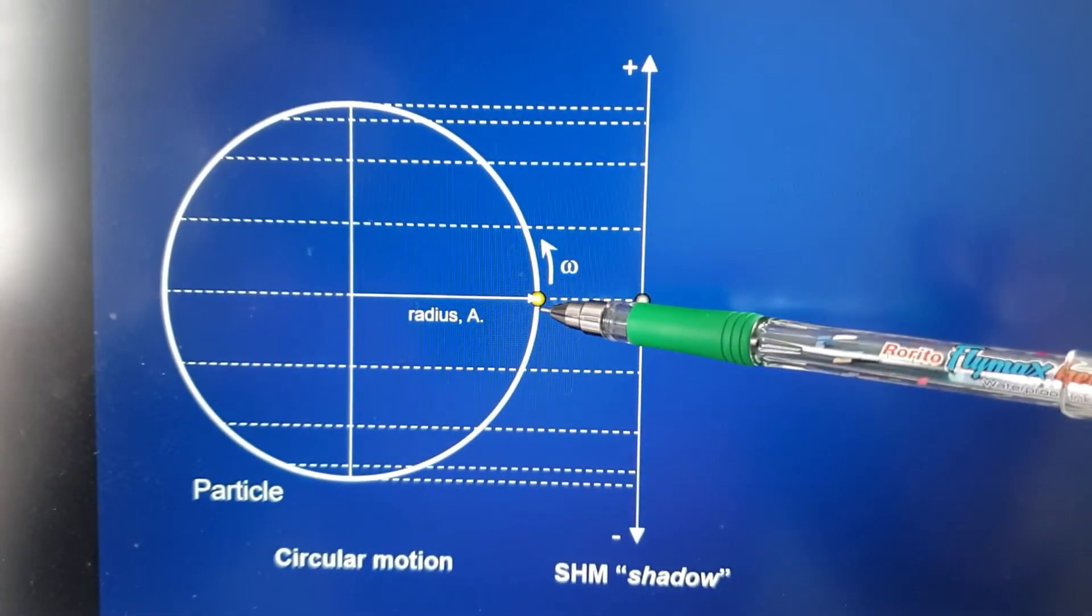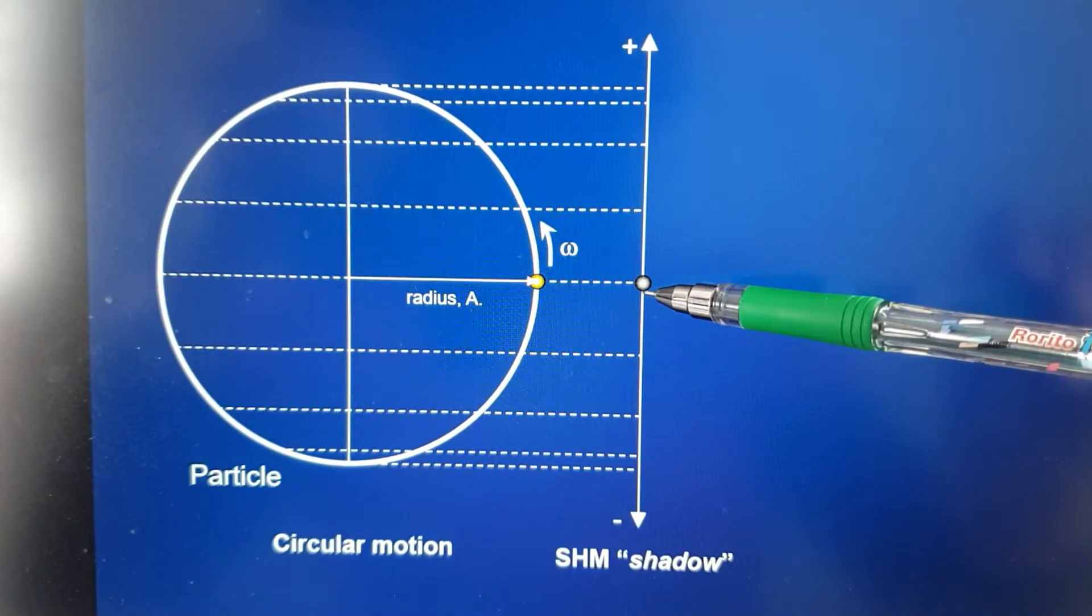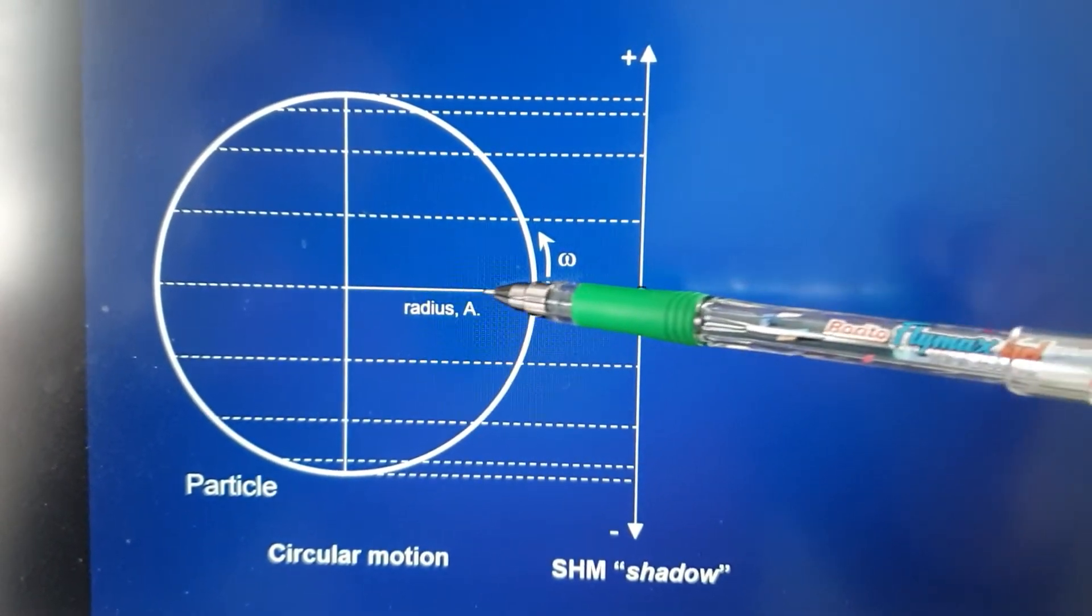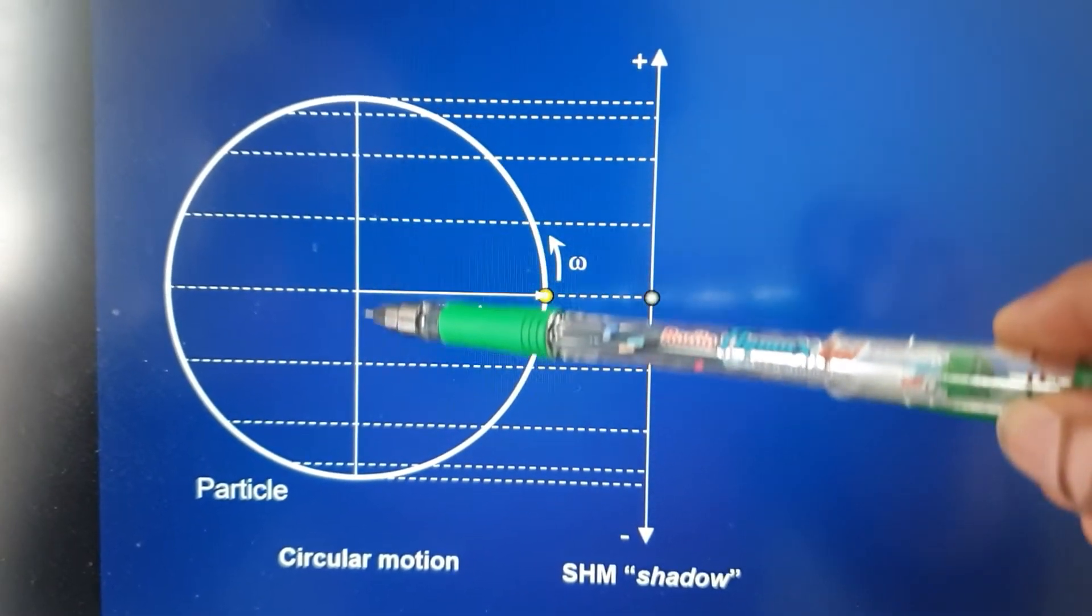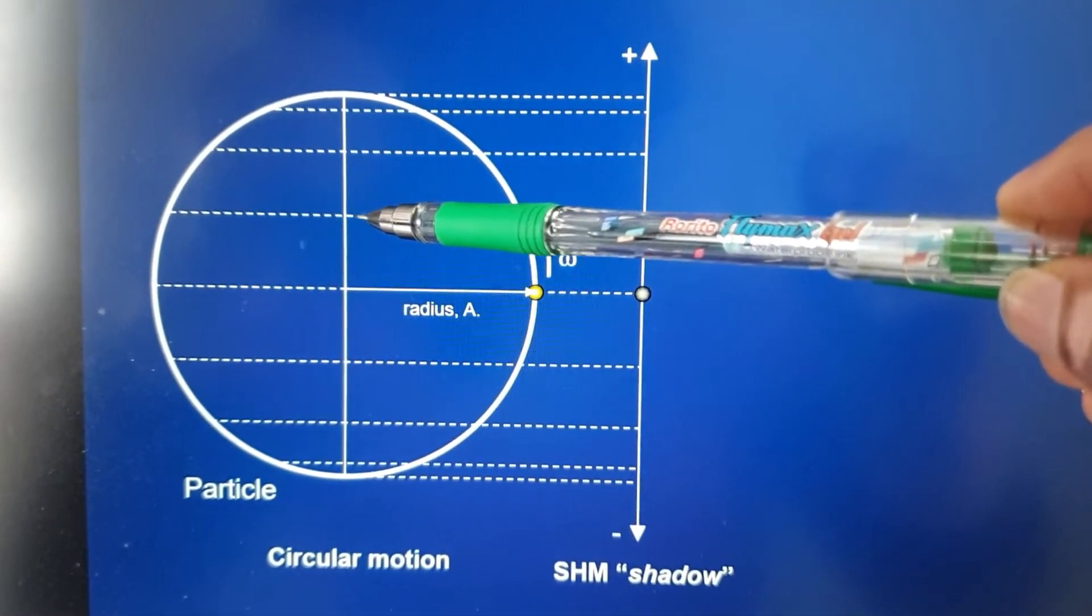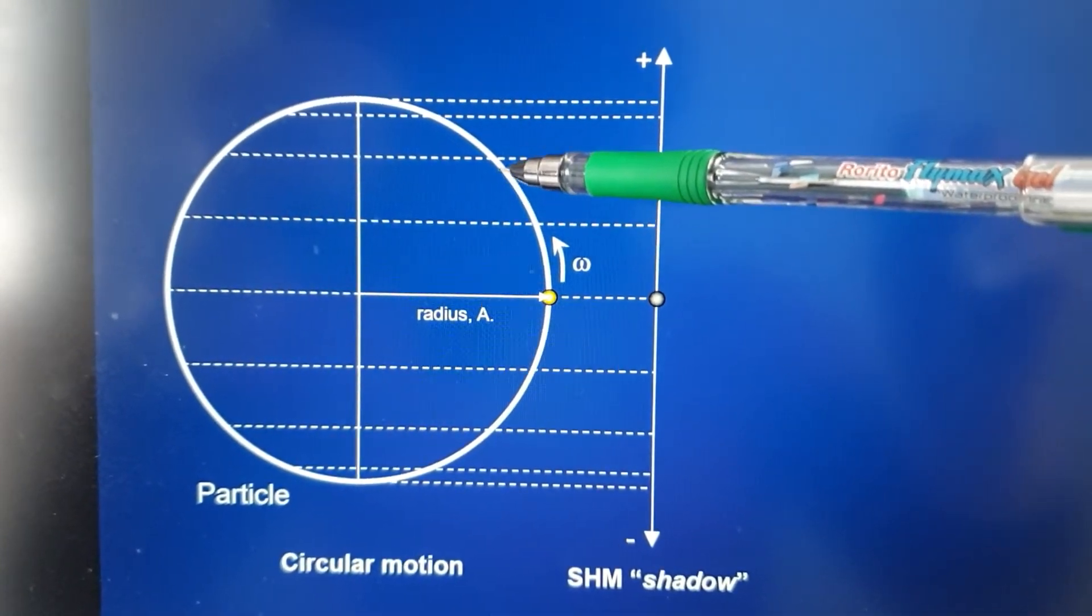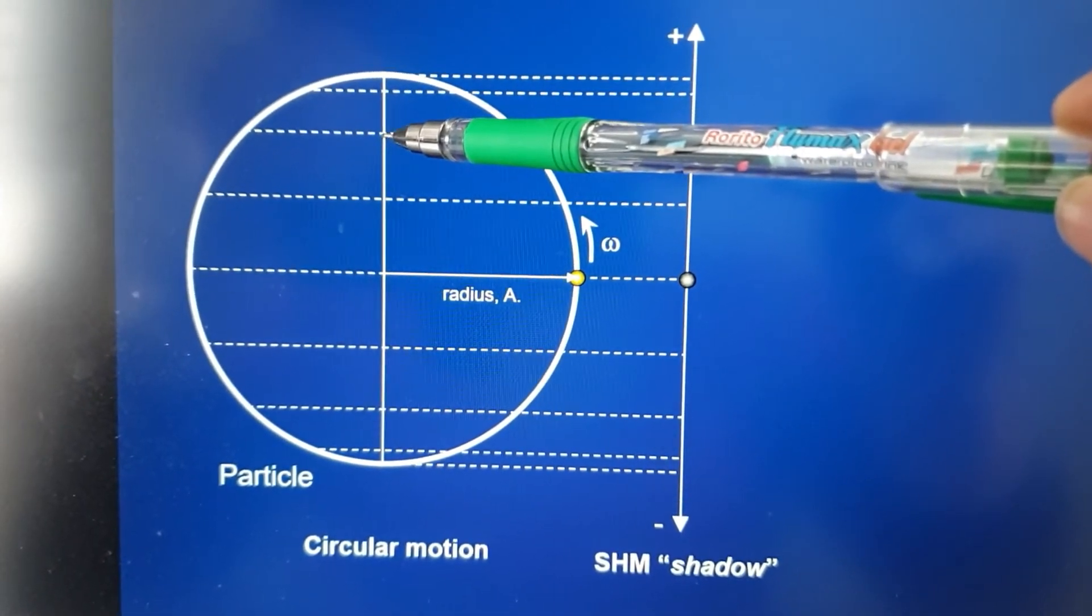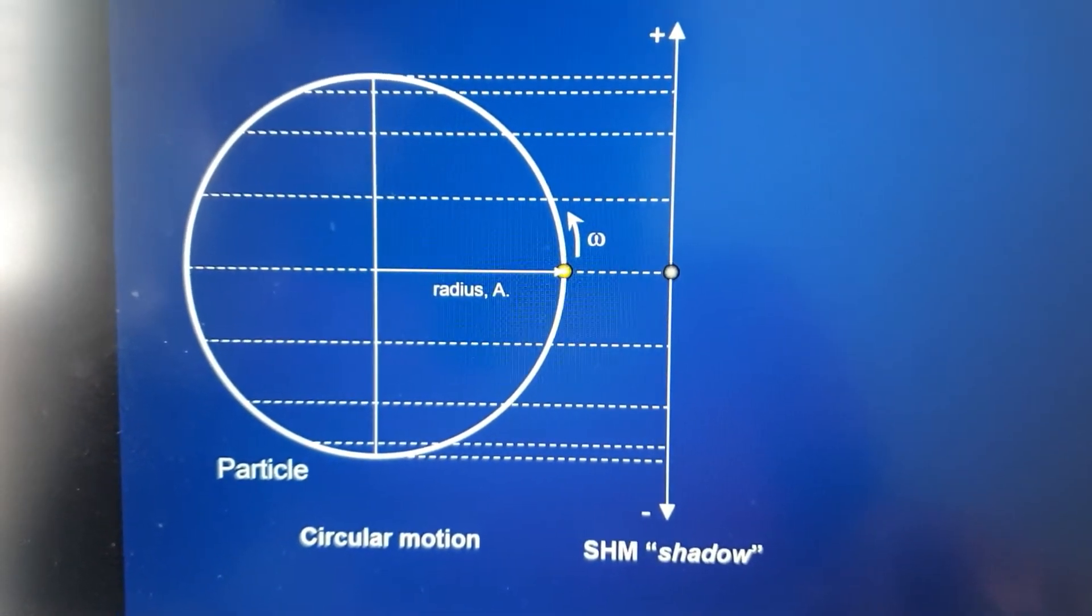One more thing I'd like you to know is that the reference particle and the simple harmonic motion particle are always in the same horizontal line. So when the simple harmonic motion particle is here, the reference particle is in the same horizontal line there. The reference particle travels up here, the simple harmonic motion particle is there.